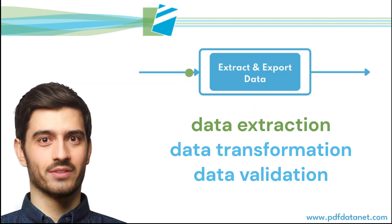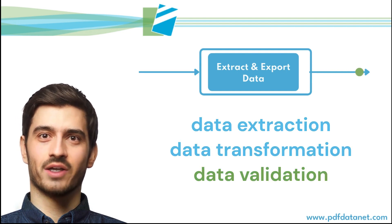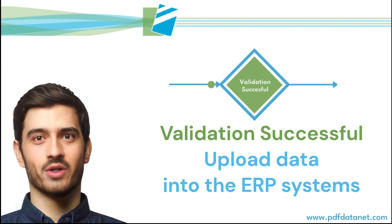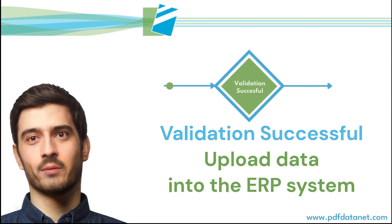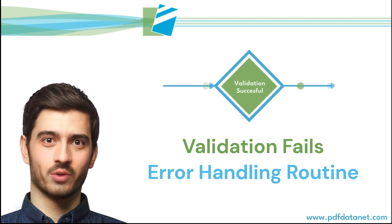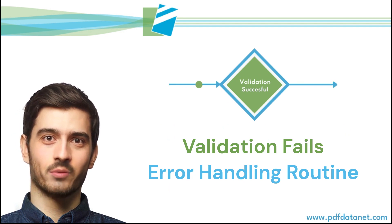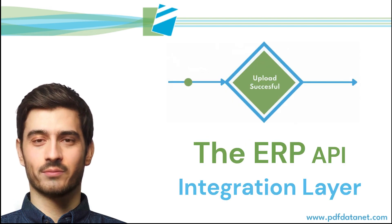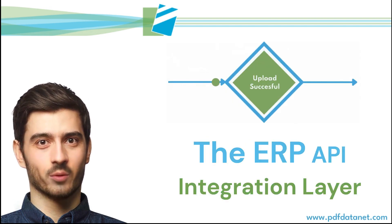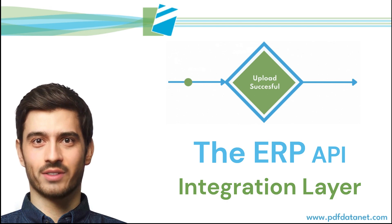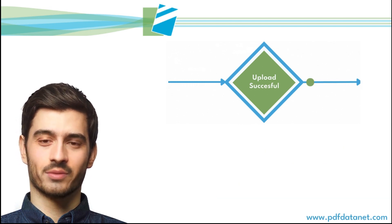The required data is now extracted, transformed, and validated. If the data validation step is successful, the order or invoice is passed for uploading into the ERP system. Any failure of the user-defined business rules will route the document into the error handling process. The ERP API or an integration layer uses the data to create the new transaction.